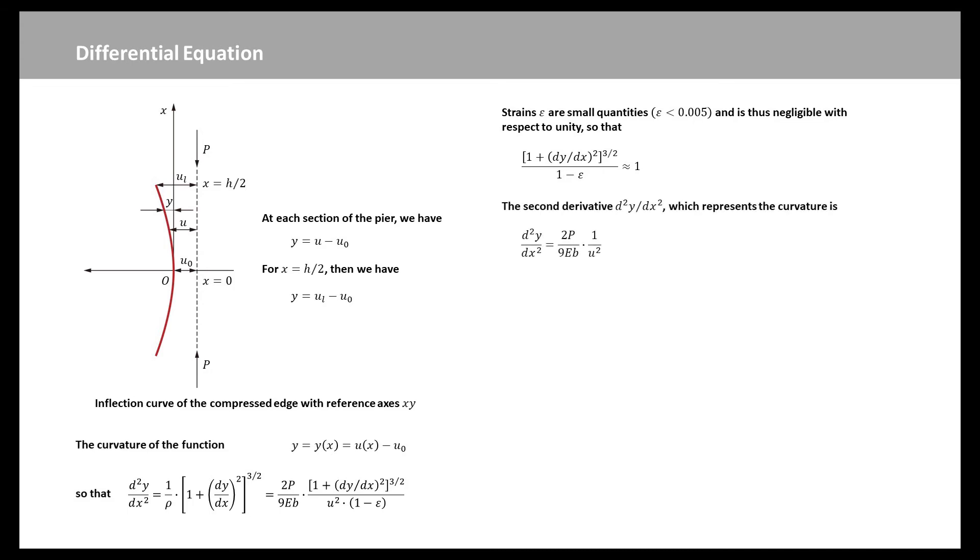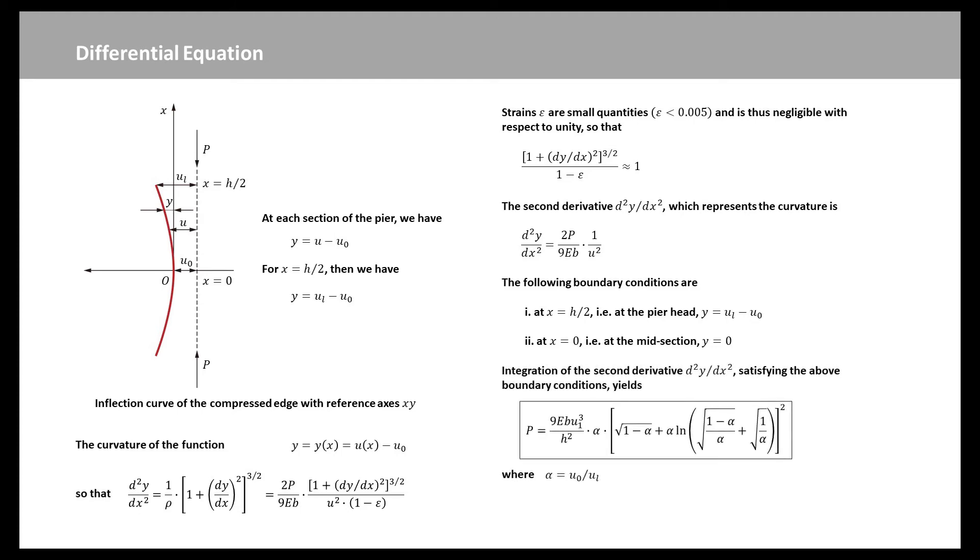Then the second derivative can be expressed as this equation. In order to integrate this differential equation, we must consider the two boundary conditions. At X equal to half of H, Y is UL minus UO. At X equal to 0, Y is 0. Satisfying the two boundary conditions, the integration is obtained as this equation, where alpha equal to UO over UL. Note that the eccentricity E is given by half of T minus UL. The integration expresses the relation between the flexure factor alpha and the eccentric axial load P.